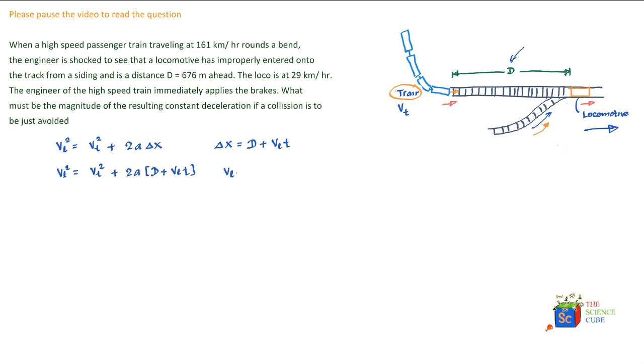We also know that final velocity vL equals its initial velocity plus at. If we substitute the value of t from this equation into this equation, what we get is vL² = vT² + 2a·d + vL(vL - vT)/a.